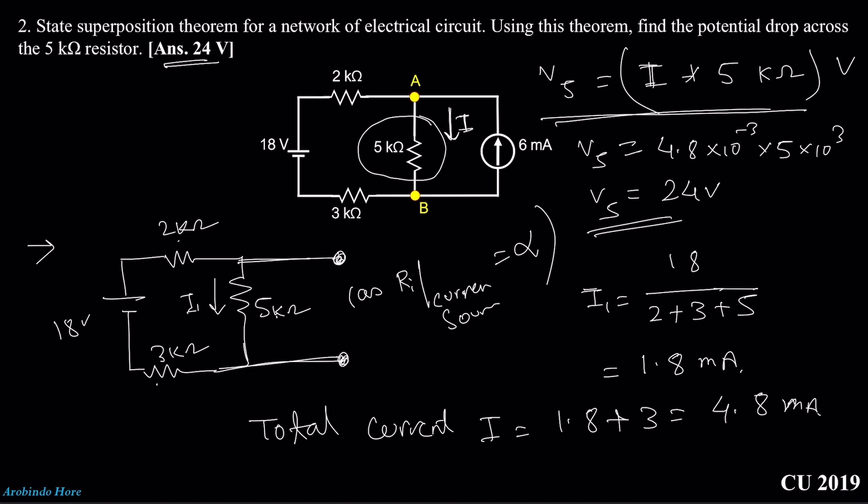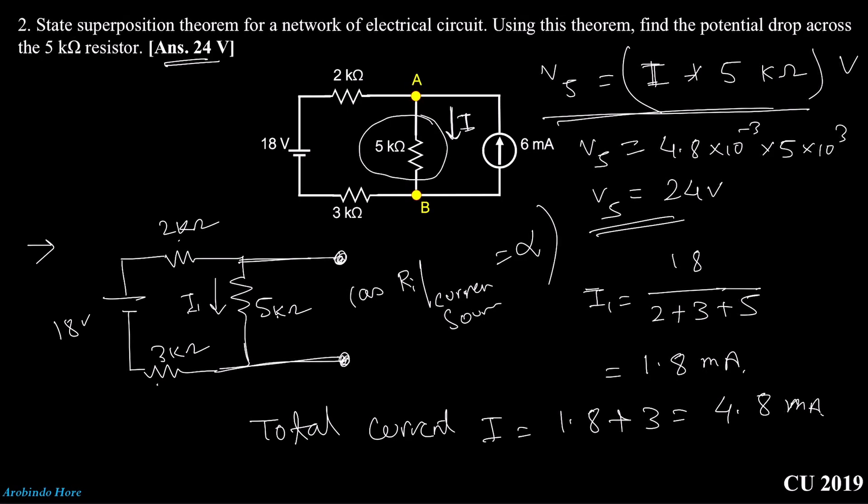Whenever you encounter a superposition theorem problem, just do the calculation with only one source at a time. Replace the other source by its internal resistance, calculate the individual current or voltage, and then do the addition or subtraction. It is very simple. Now let's go to the simulation and see if our calculation result matches the simulation result.